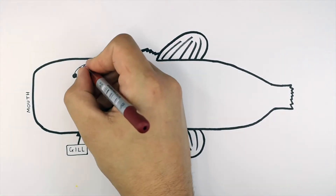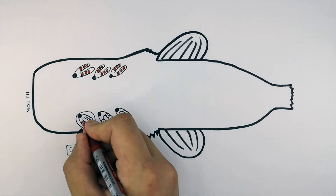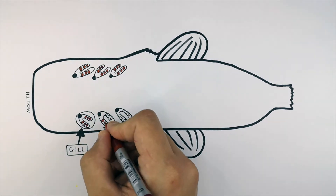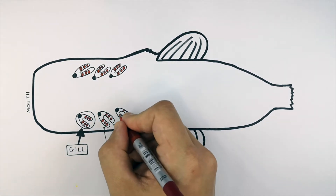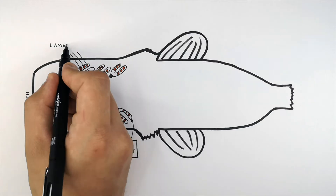Lamellae are plates where you find many blood capillaries. So these are the lamellae.